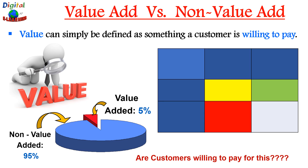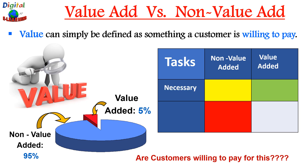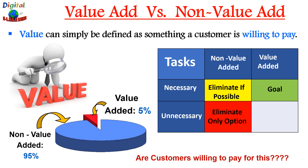Let's understand this more from this grid. We list non-value-added activities on one axis and value-added activities on the other, and on the column we list necessary and unnecessary activities. If it is non-value-added and necessary, we should look to reduce it. If it is non-value-added and unnecessary, we need to eliminate it as soon as possible — that is the only option. If it is value-added and necessary, that should be your goal. We need to work on all four parameters.